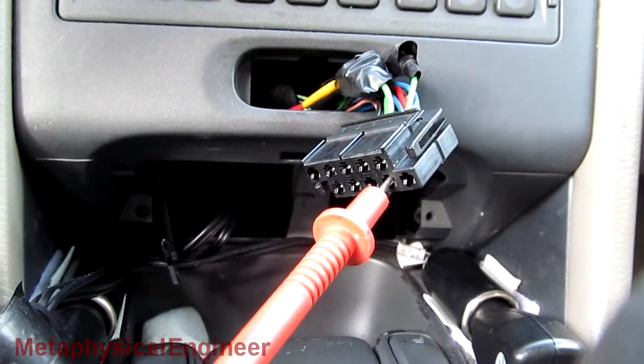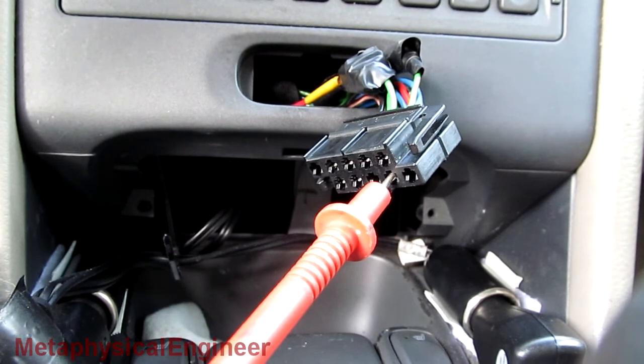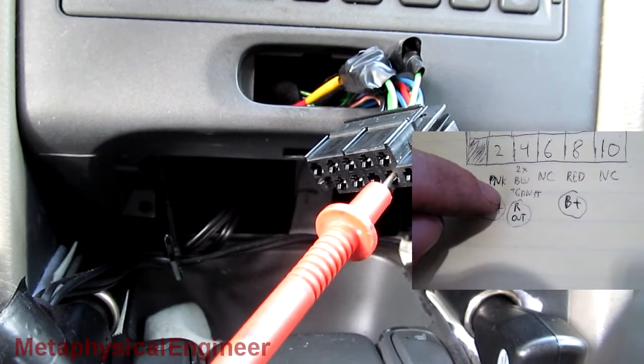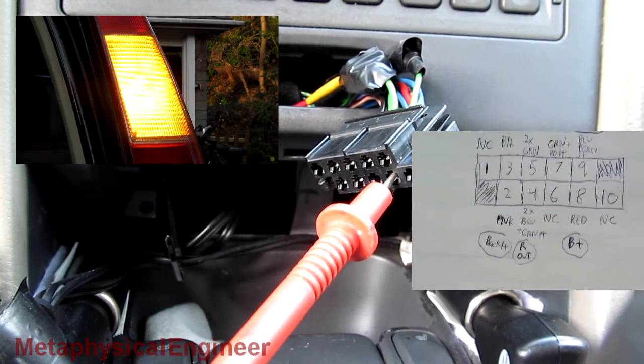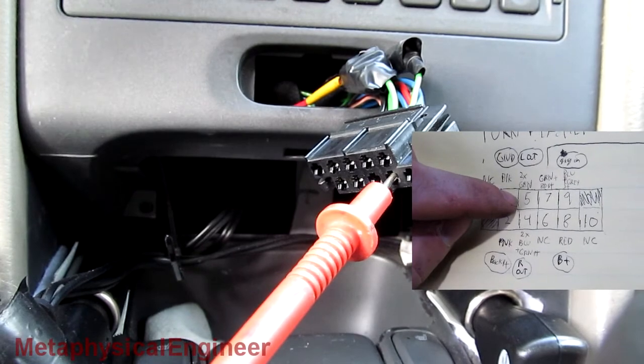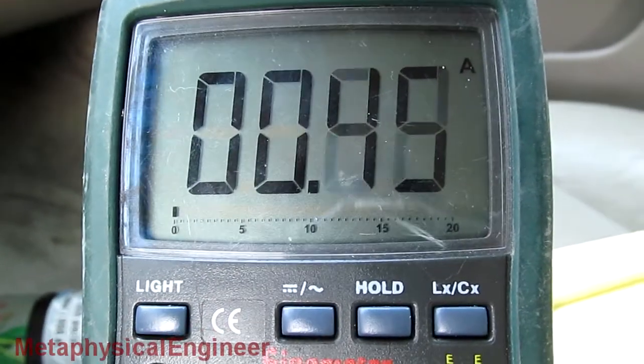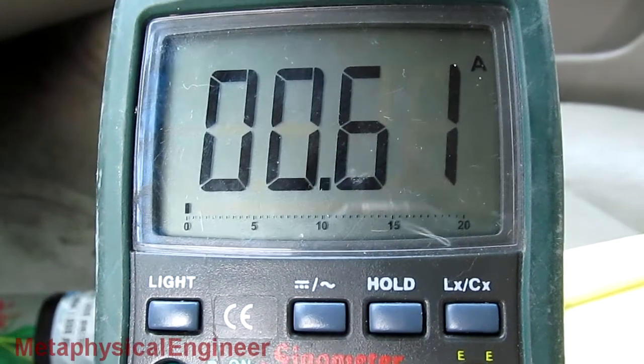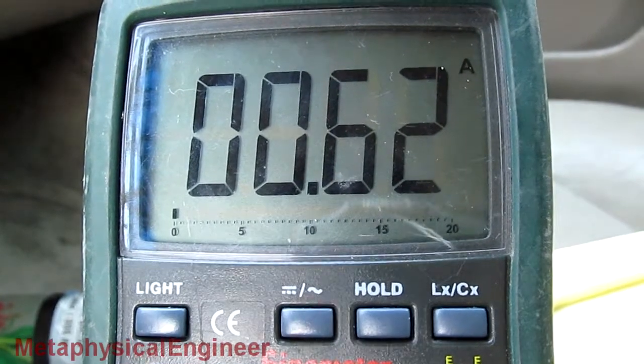I remove the flasher unit from the vehicle and hook the red lead of my multimeter up to pin 8, which is battery positive. If I attach the common terminal to pin 4, the right side turn signals will light up, and if I do it to pin 5, the left side will light up. This way, I can measure the current draw. 0.61 amps, that's a good measure. The other side, 0.62 amps, okay.